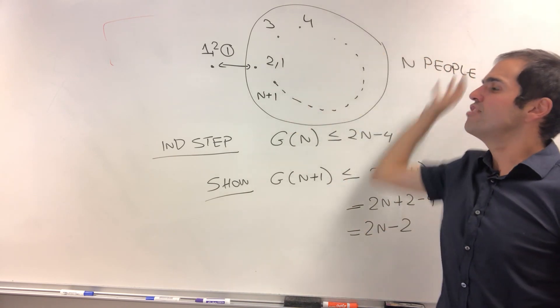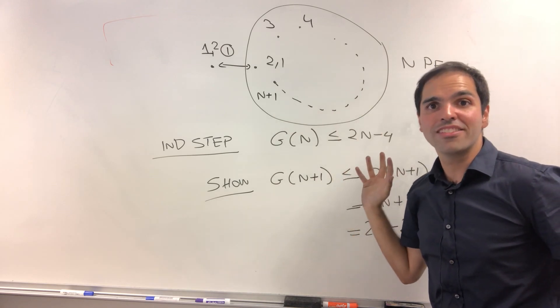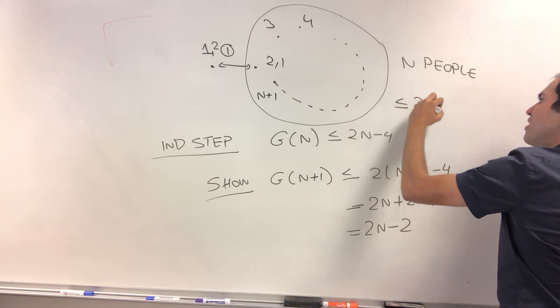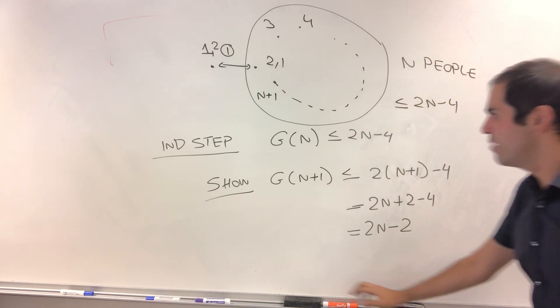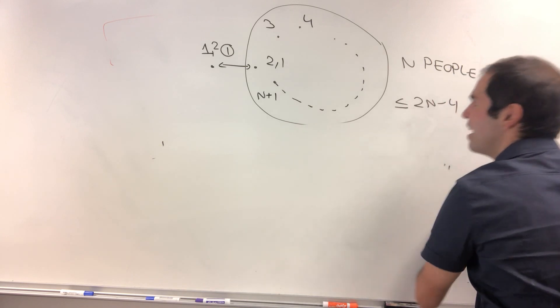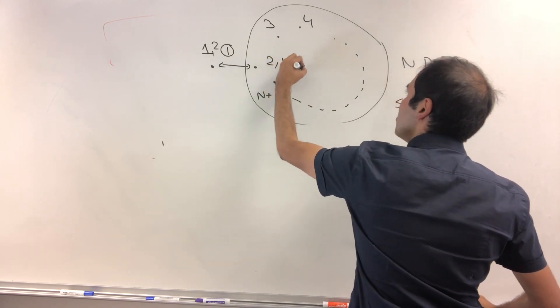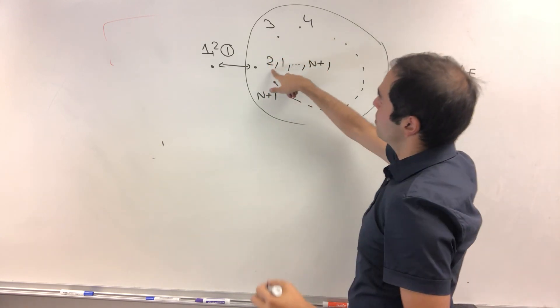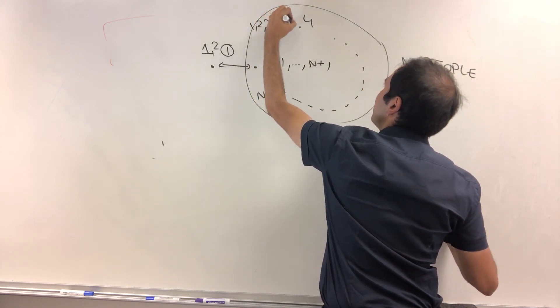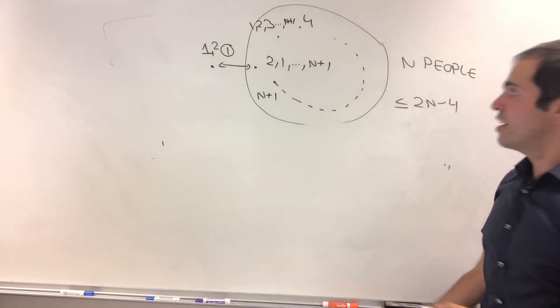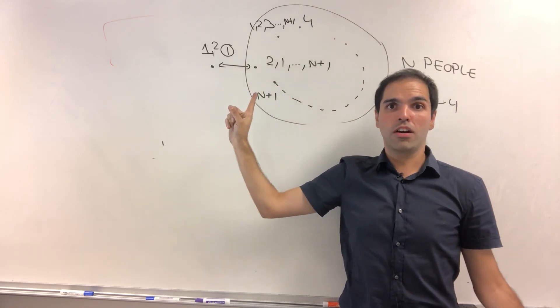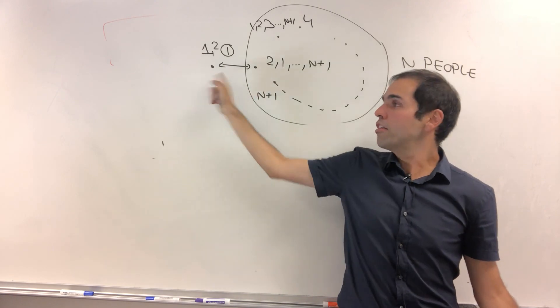So for everyone to know each other's gossip by inductive hypothesis, we know this is less than or equal to two n minus four. So after this two n minus four calls, everyone really knows each other's gossip because two stole from one kind of. So one, two, three, up to n plus one, et cetera. But then there's a lonely first person who only knows one gossip.